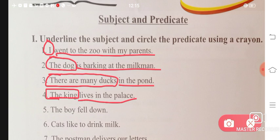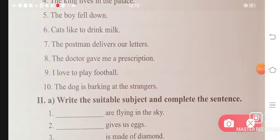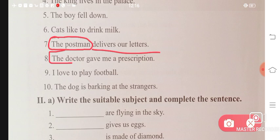'The boy fell down.' The boy is your subject. 'Fell down' is the predicate. 'Cats like to drink milk.' Cats is your subject. 'Like to drink milk' is your predicate. Next is number seven: 'The postman delivers our letters.' The postman is your subject. 'Delivers our letters' is your predicate. 'The doctor gave me a prescription.' The doctor is your subject and 'gave me a prescription' will be your predicate. 'I love to play football.' I is your subject. 'Love to play football' will be your predicate. 'The dog is barking at the strangers.' The dog is your subject. 'Is barking at the strangers' will be your predicate.